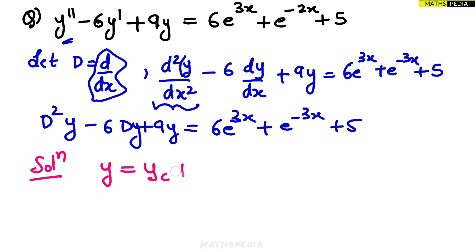The solution to a non-homogeneous DE is y = yc + yp, where yc is the complementary function and yp is the particular integral. We need to find both of these. We will find yc first.